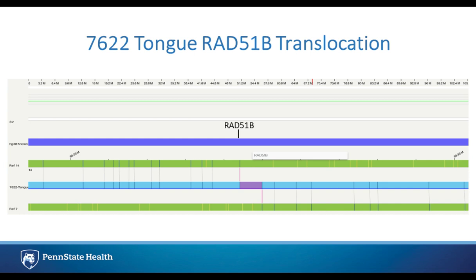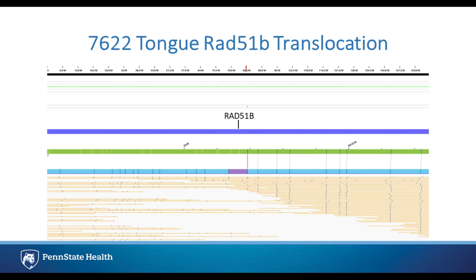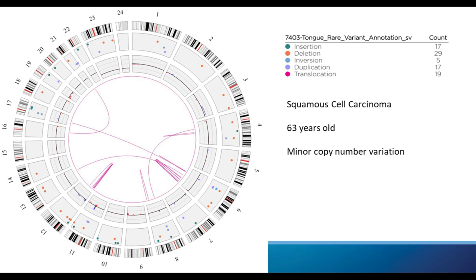Moving to the RAD51D translocation — you can see a translocation event between chromosome 14 and chromosome 7 for this tongue cancer. You're also able to view the individual digital molecules to see how they support the structural variant. The yellow lines at the bottom are individual digital molecules, and a number of them span this region between the two different chromosomes, supporting this translocation call.